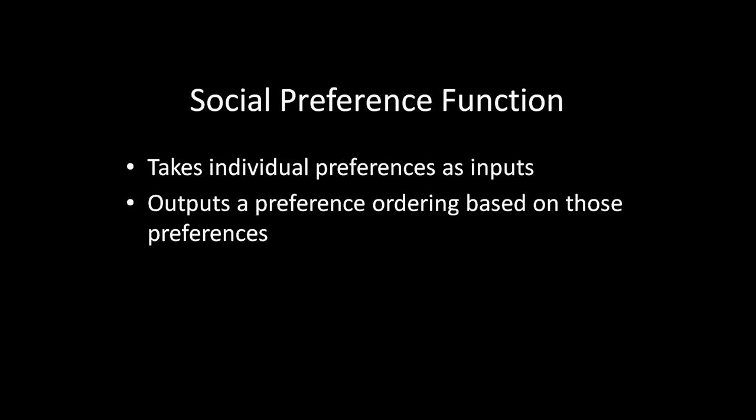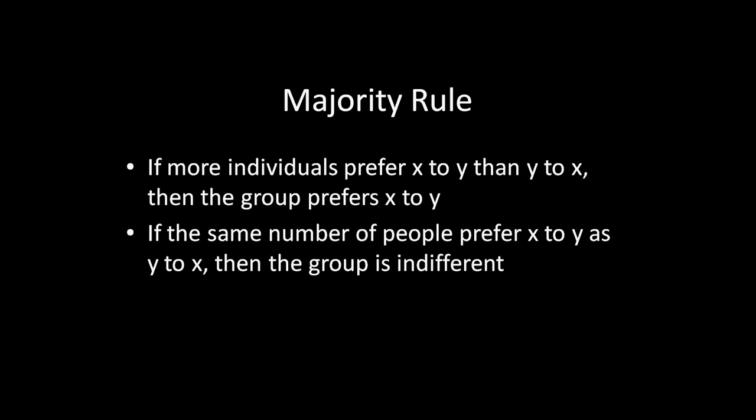It might help to see one of these social preference functions in action. The most common way of aggregating preferences in this manner also produces the intransitivity, so let's think about majority rule. Majority rule says that if more individuals prefer X to Y than Y to X, then the group prefers X to Y. If the same number of people prefer X to Y as Y to X, then the group is indifferent.